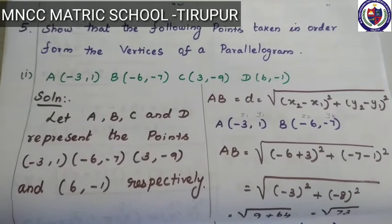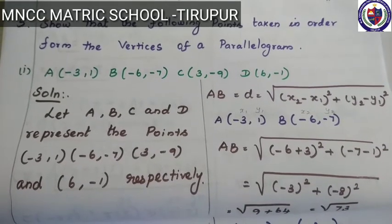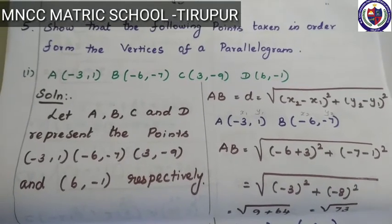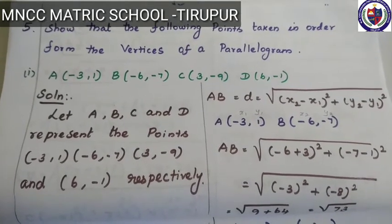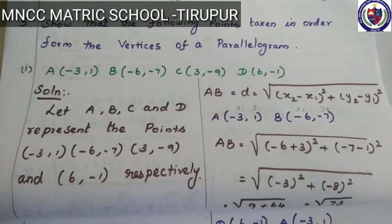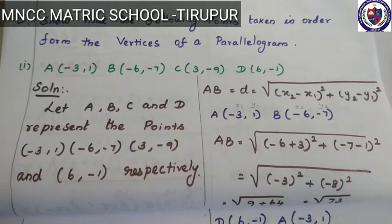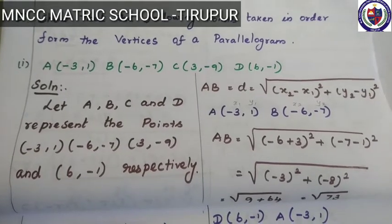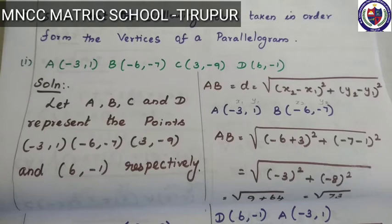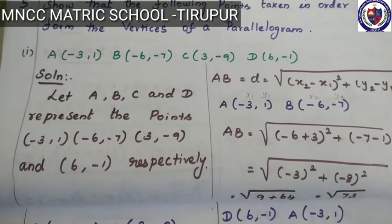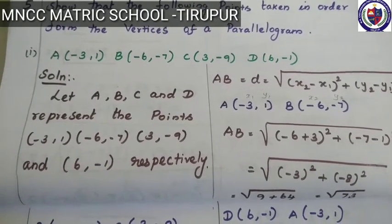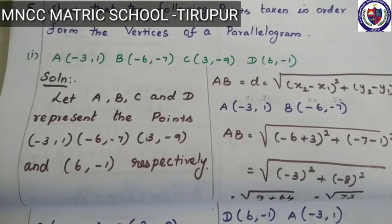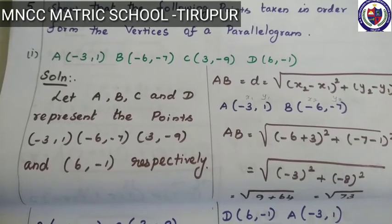Fifth sum: show that the following points taken in order form the vertices of a parallelogram. Parallelogram meaning the opposite sides are equal. They are given four points. Let ABCD represent the points: A(-3,1), B(-6,-7), C(3,-9), and D(6,-1). Two sides are equal and another two sides are equal.